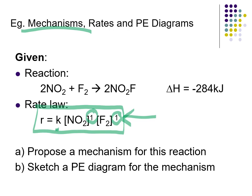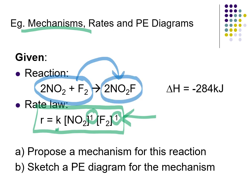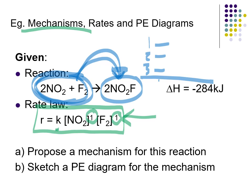Just because we have these reactant pieces doesn't mean we jam them together in one go to get a product. Think about building a car out of Lego — you buy a set, you don't just take all the pieces and jam them together. The overall process goes from pieces to car, but it's broken into several steps. It's the same for a reaction. There may be several steps involved: step one, step two, step three, and in the end you get the overall equation. Those steps are the mechanism.